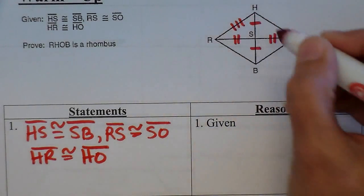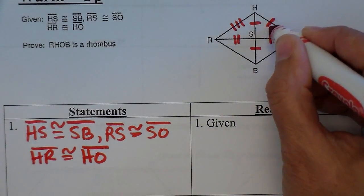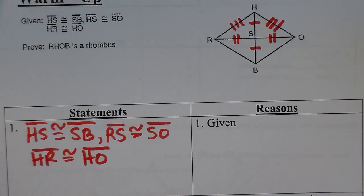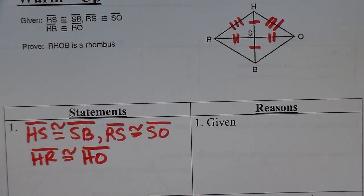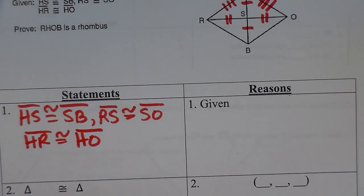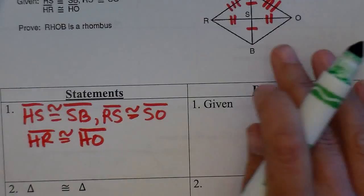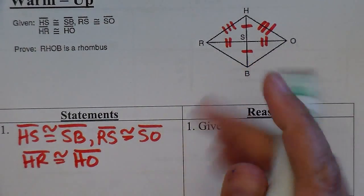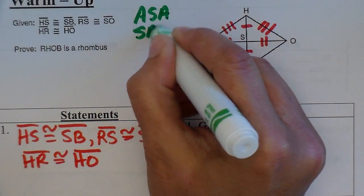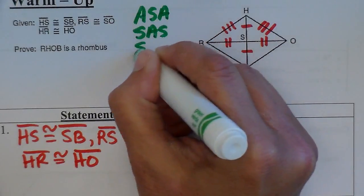So HR is congruent to HO. Prove this is a rhombus — besides laughing at the fact that there's a side labeled HO. So the first thing we're going to do is look at the triangles that we can prove here. I've already been given enough information to prove that these two triangles are congruent. Here are your possibilities again — I'm going to keep writing these so you remember them.